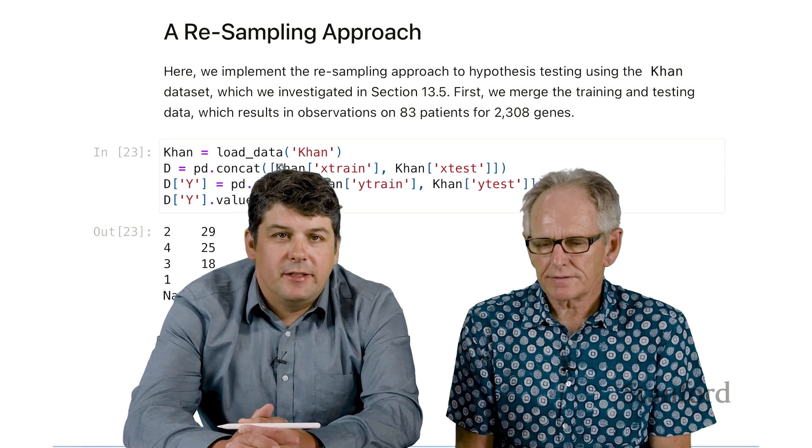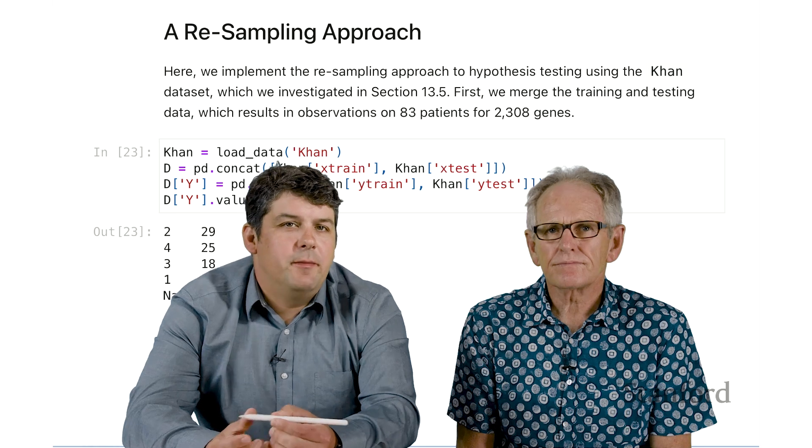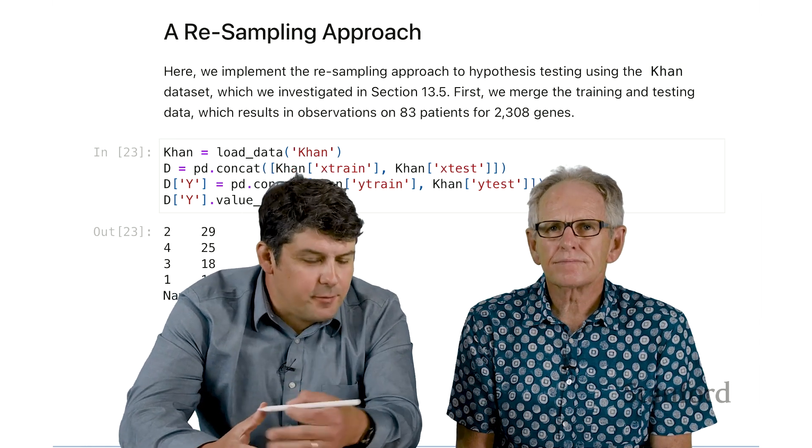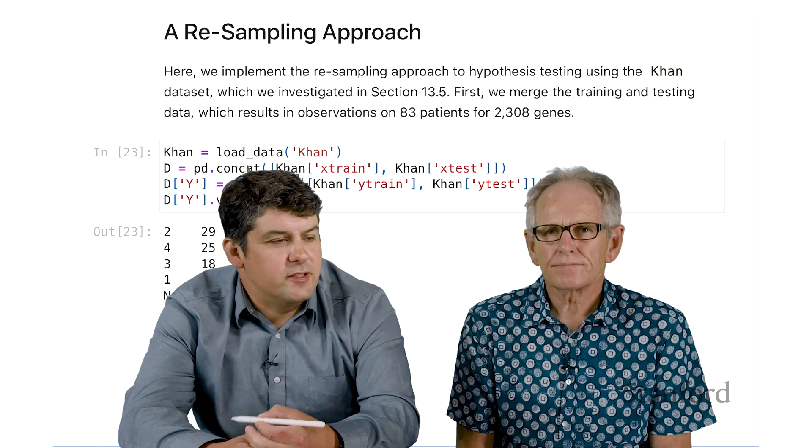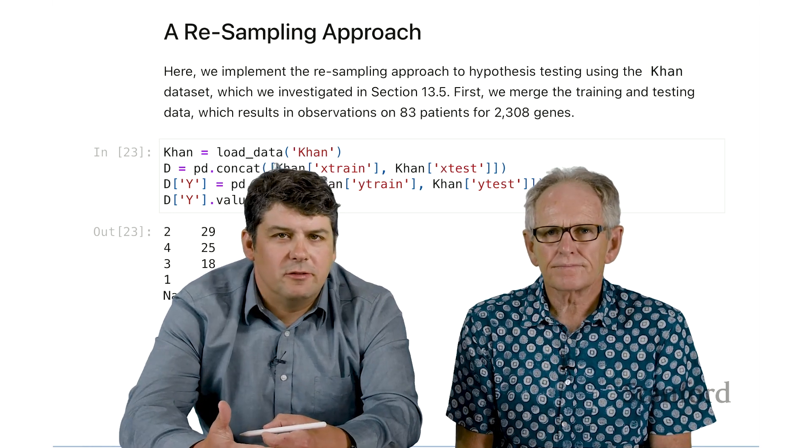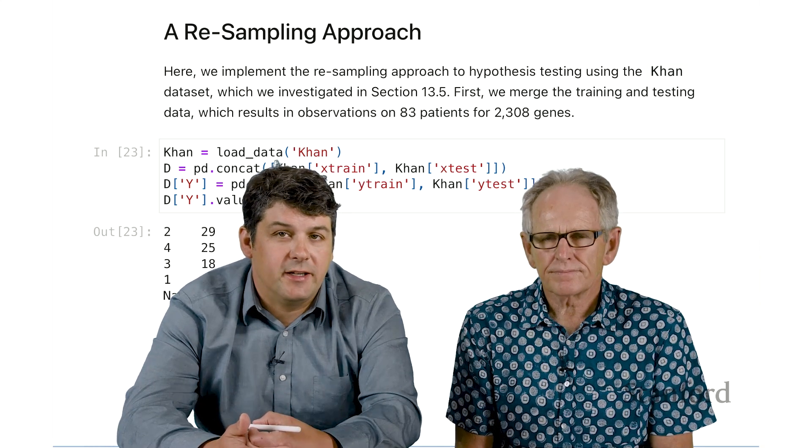Our last example in today's lab is going to be a sort of non-parametric test procedure. So what we've done up to now, we've been using these functions t-test from underscore independent or related or various ones from the scipy stats package.